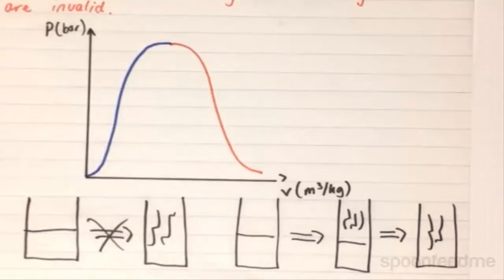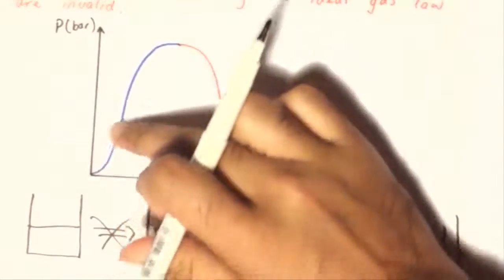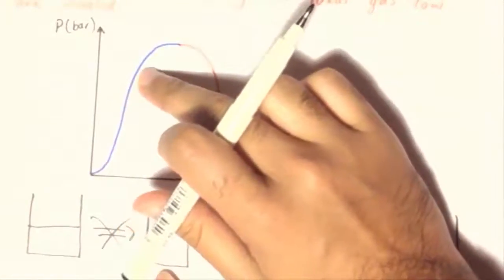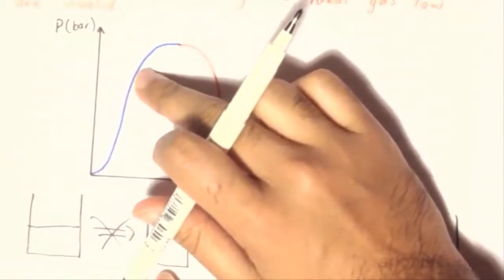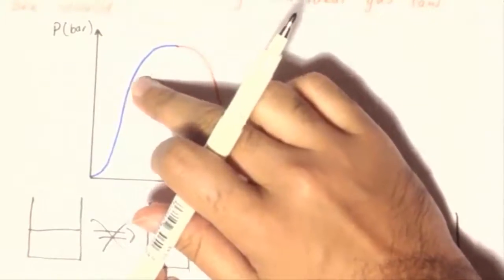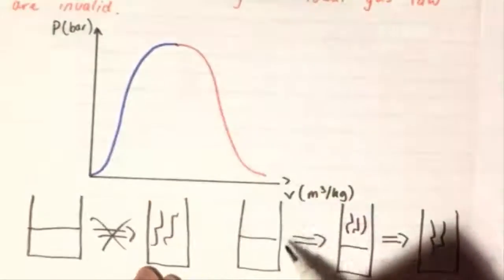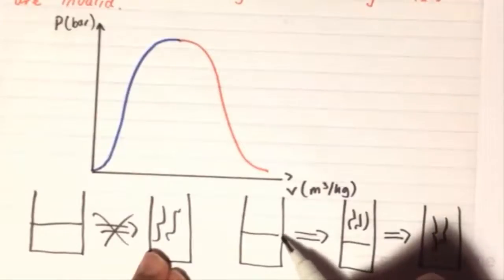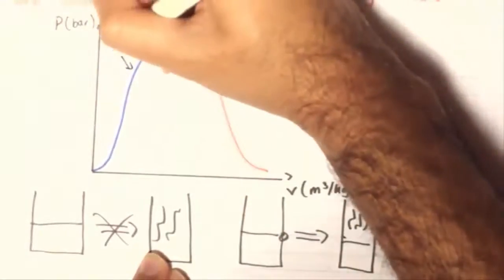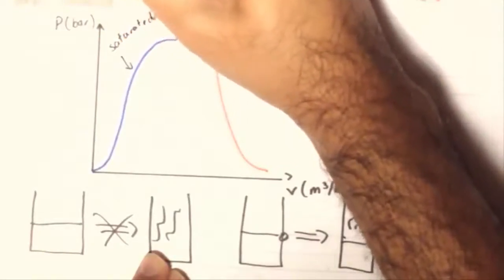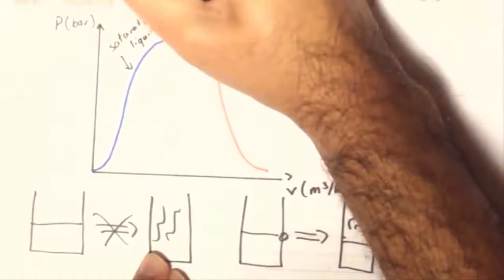What this curve, therefore, in particular is telling us, is that along this line, which we will call the saturated liquid line, is the instance when the water is first changing into a gas. So, when it is just going from this state to that state. So, this is the saturated liquid line.